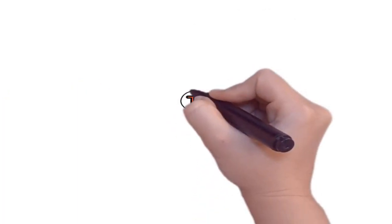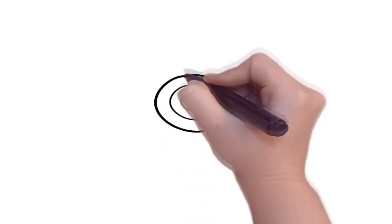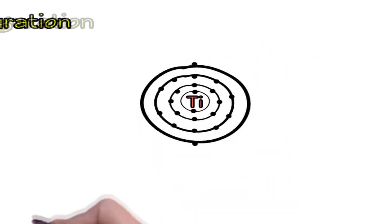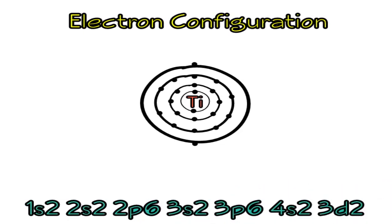Now let's take a look at the electron configuration of titanium. If you use the shorter version, you'll have in the bracket AR 4S2 3D2.